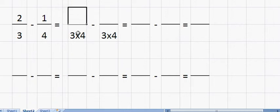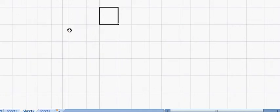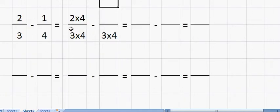On the top, just as we did when we were adding fractions, on top of the first one, we put this number multiplied by this one. So that's going to be two by four. And then on top of this one, it's going to be this number multiplied by this one. So that's going to be one by three.